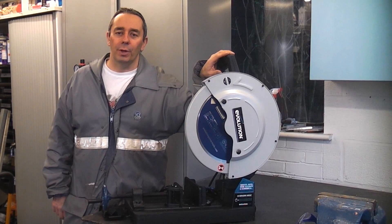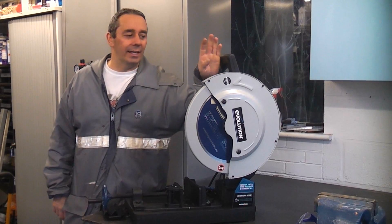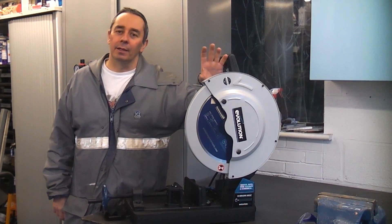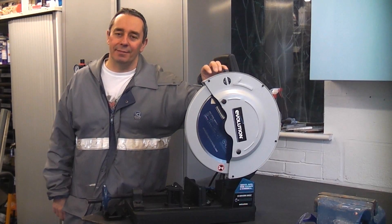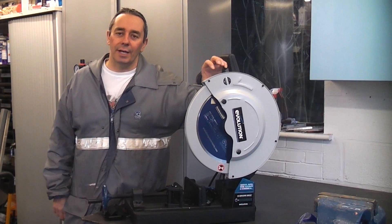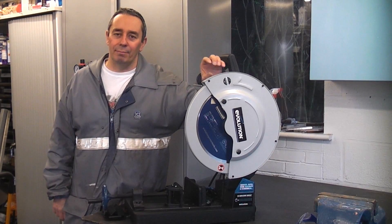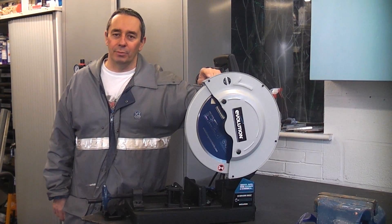This machine can cut wood, plastic or steel with the blade which is supplied. The blade will actually outlast approximately 20 abrasive discs. So you should get approximately 1000 cuts in mild steel from one of these blades.